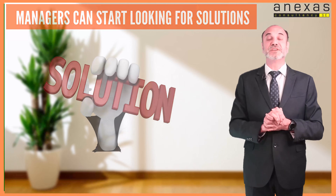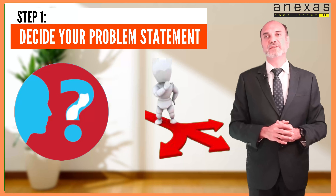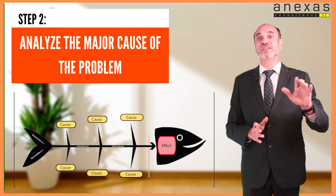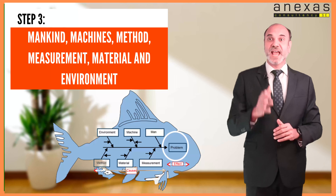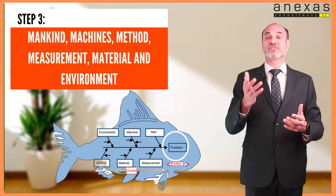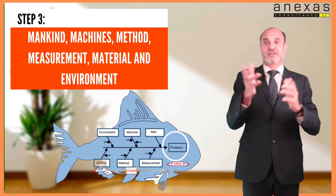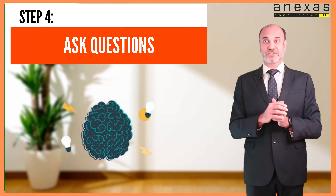Once all the causes underlying the problem have been identified, managers can start looking for solutions to ensure the problem doesn't become a recurring one. Here are the steps to construct a cause and effect diagram. Step one: decide your problem statement and write it in the center within a box. Step two: analyze the major causes of the problem and write them down next to the problem statement horizontally. Step three: categorize the causes as branches of the mid vein, using categories like Man, Machine, Method, Measurement, Material, and Environment — the six M's.